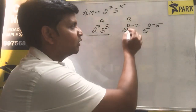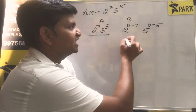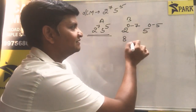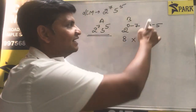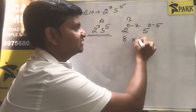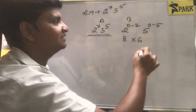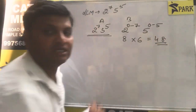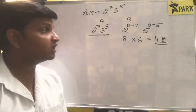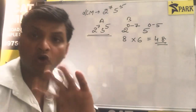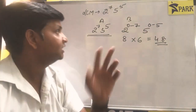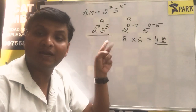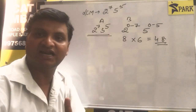So how many numbers will there be? From 0 to 7 means how many cases? Total 8 cases. And here 0 to 5 means how many cases? 6 cases. So 8 into 6 means 48. So there will be 48 pairs of numbers where both the highest power of 2 and 5 are coming from number A.